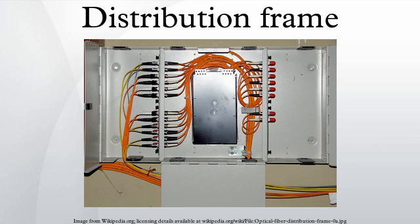In broadcast engineering, a distribution frame is a location within an apparatus room through which all signals pass, with the ability to arbitrarily route and connect sources and destinations between studios and other internal and external points.